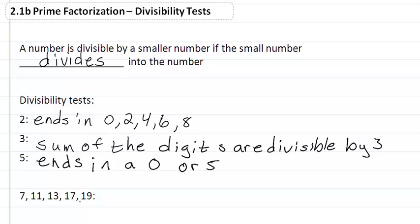7, 11, 13, 17, 19 they are prime numbers obviously, but we do not have divisibility tests for them. So for them we just divide.